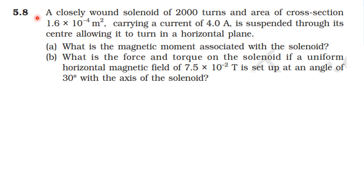Magnetism and electromagnetic induction exercise 5.8. A closely wound solenoid of 2000 turns and area of cross-section 1.6 into 10 power minus 4 meter square, carrying a current of 4 ampere, is suspended through its center allowing it to turn in a horizontal plane.